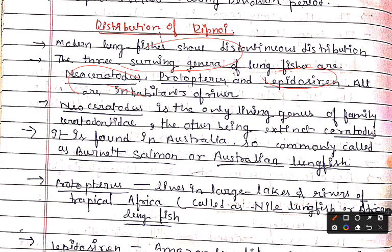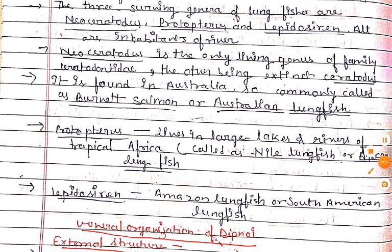Neoceratodus is the one living genus of family Ceratodontidae, the other members being extinct. It is found in Australia, which is why we call it the Burnett salmon or Australian lung fish.